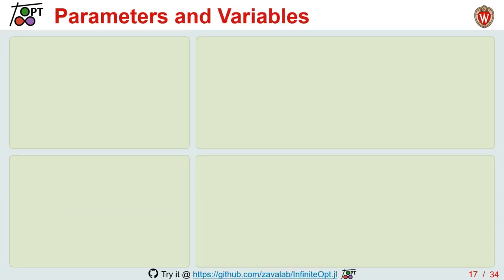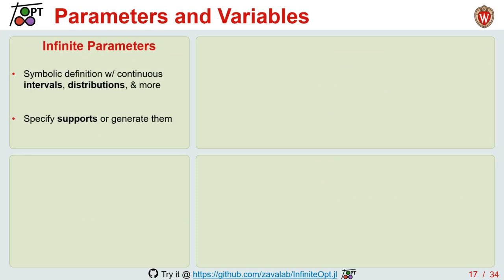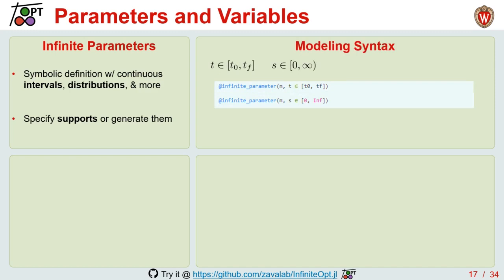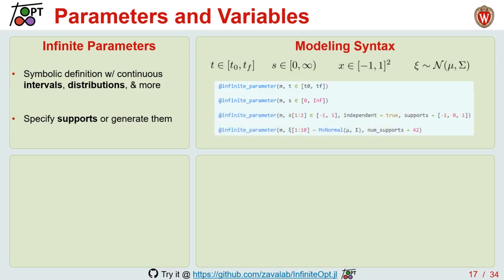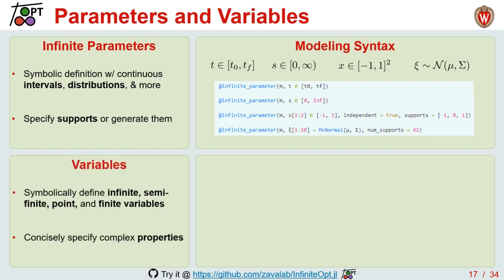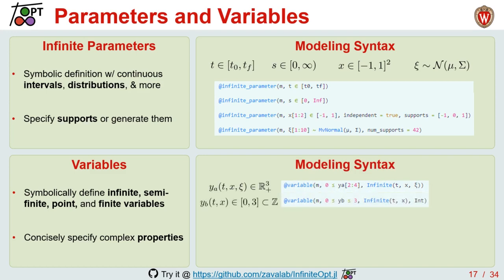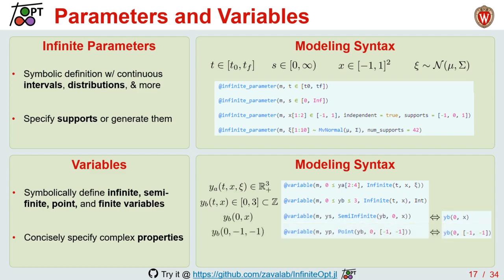The syntax for infinite parameters can incorporate a variety of infinite domains and supports. For example, we can define a time parameter, a parameter over an infinite horizon, a spatial parameter x, or a random parameter xi that follows a multivariate Gaussian distribution — all following a very symbolic and intuitive syntax. We can also incorporate all the variable types discussed and define them using the JuMP variable macro, such as an infinite variable y or a restricted integer variable yb. Semi-infinite variables can be defined using macro or convenient functional syntax, as can point variables and regular finite variables.